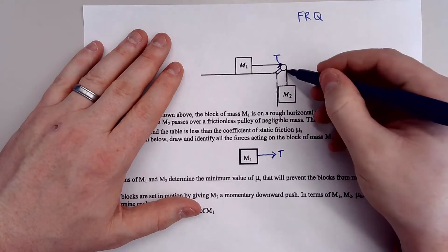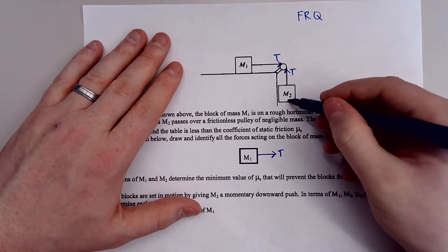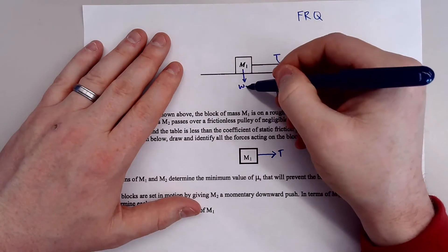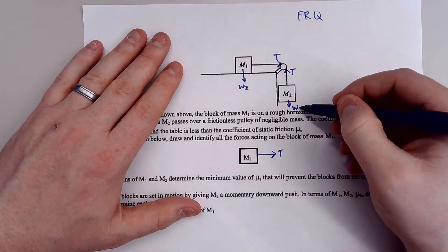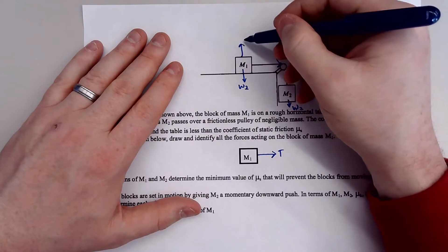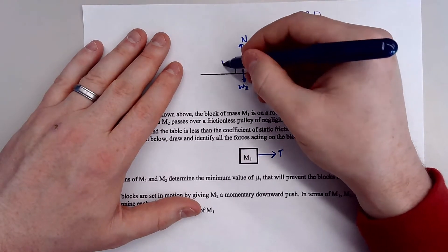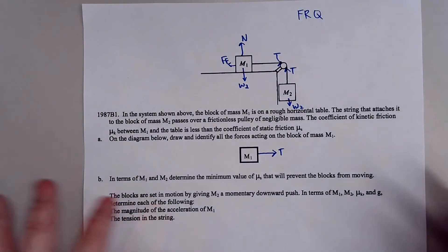There's a tension pulling this way. There's a tension pulling this way. There's the weight of this object pulling down. There's the weight of M1 pulling down, call that 2.